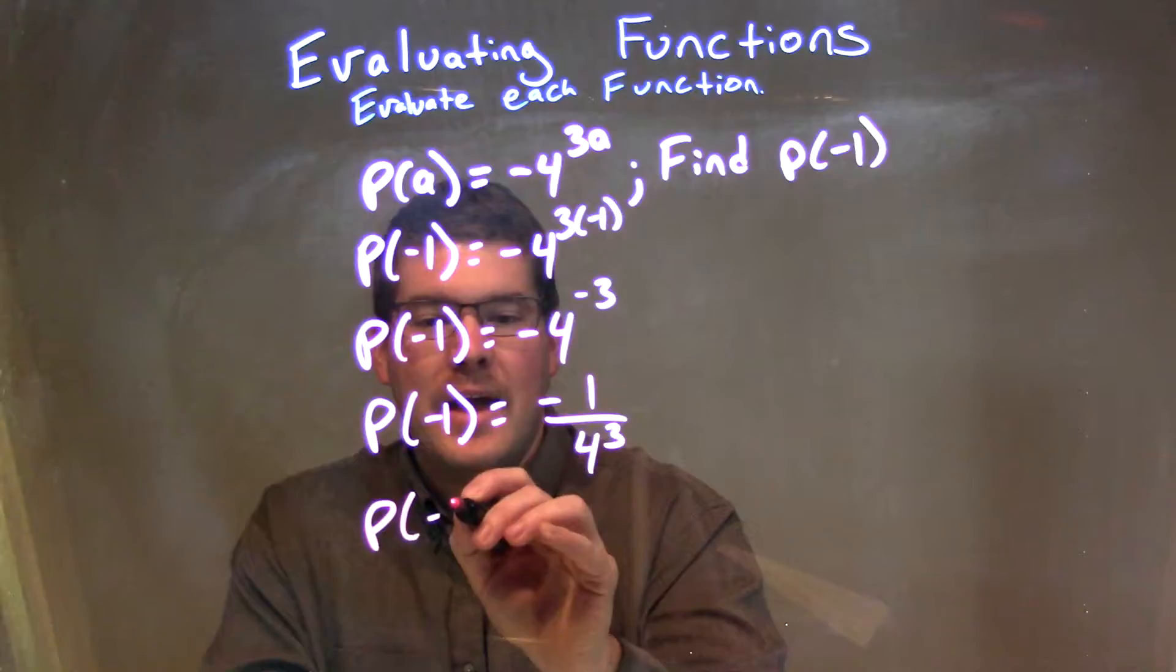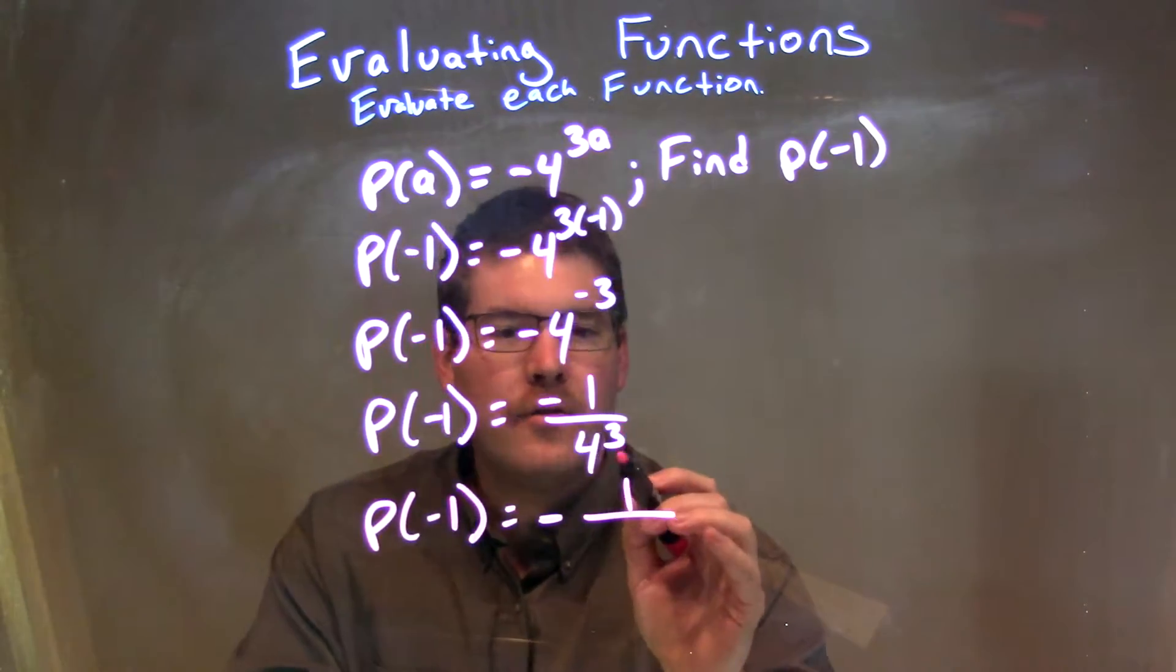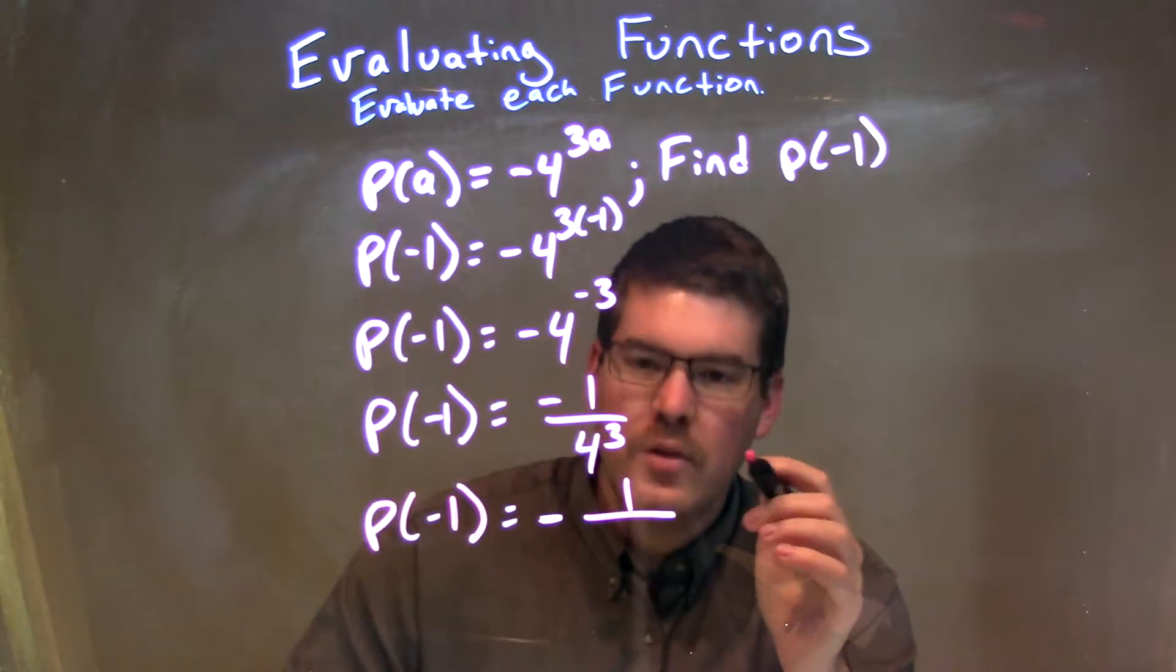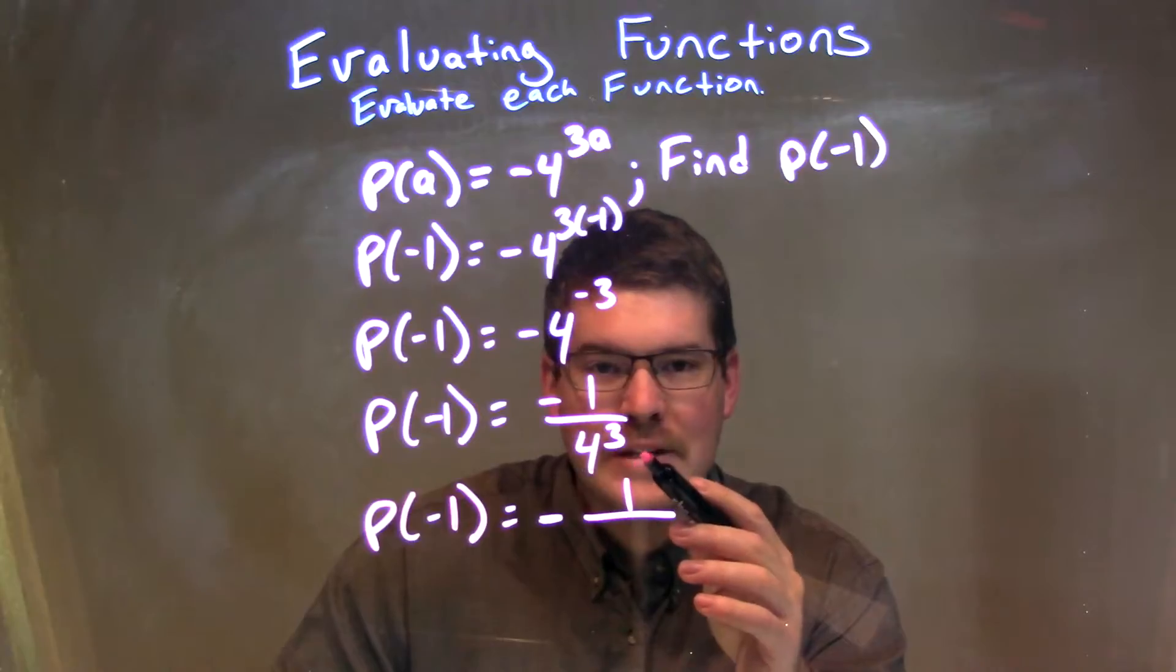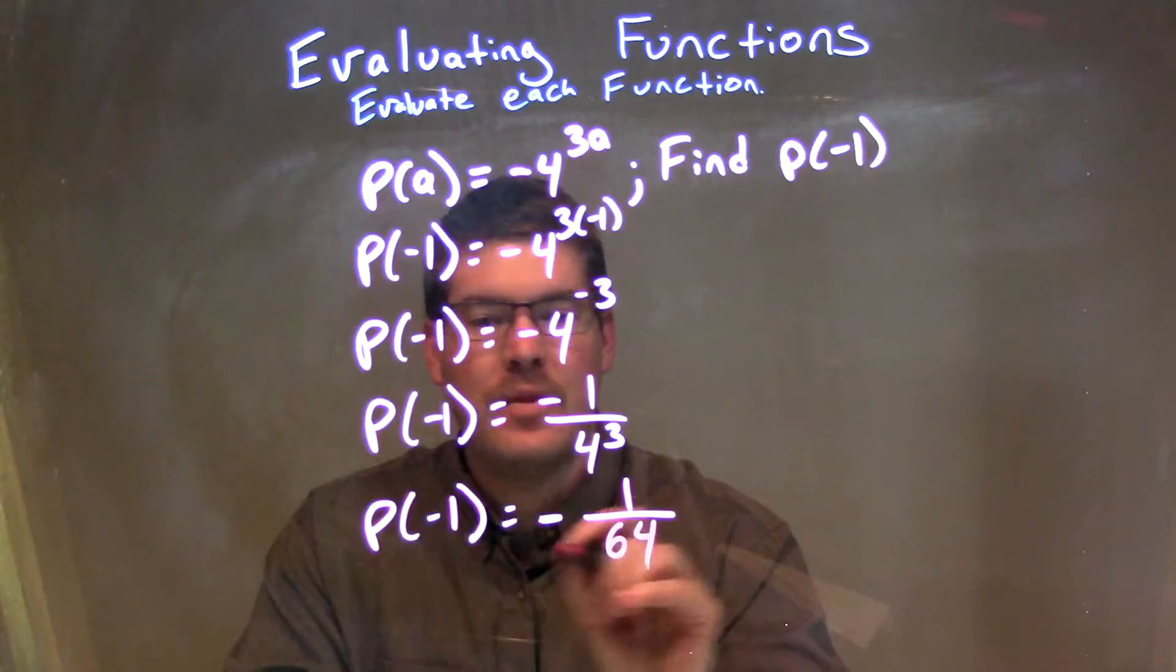P of negative 1 is equal to this with a negative out front, 1 over now 4 to the 3rd power. What's 4 to the 3rd power? Well, 4 to the 3rd power is 4 times 4 is 16 and 16 times 4 is 64.